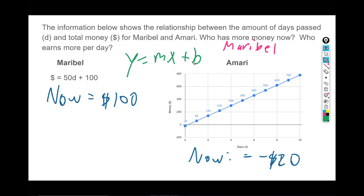We can see that Maribel, the slope of her function is 50. She's earning $50 per day. So I'm going to write per day—could have written slope or rate of change—but I'm gonna write per day $50 for Maribel.